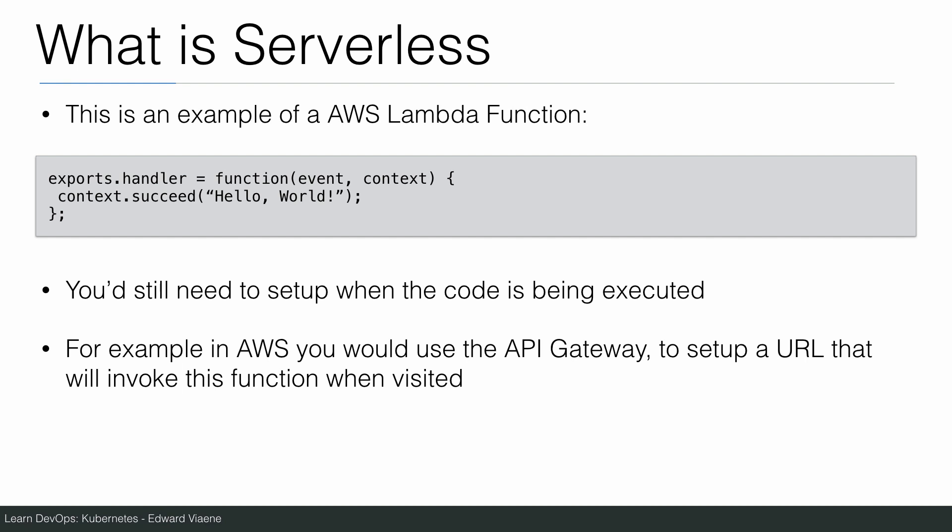What I showed you — those three lines — is just a function. It doesn't tell you when it should run. You need to connect it to another AWS service, for example the API Gateway, which will give you a hostname and a URL that you can invoke just by browsing to it. You link this function to that URL, so this function executes and then returns hello world, which is what you would then see in your browser.